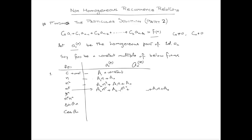If F(n) equals r raised to the power n, where r is any real number, then the particular solution will be some constant 'a' times r^n. If F(n) equals n^t multiplied by r^n, then the particular solution will be r^n multiplied by the polynomial a_t·n^t + a_(t-1)·n^(t-1) + ... + a1·n + a0.